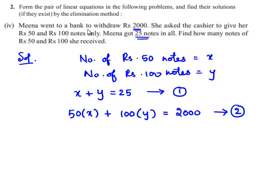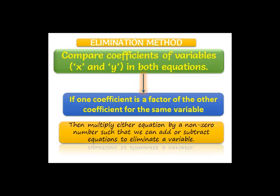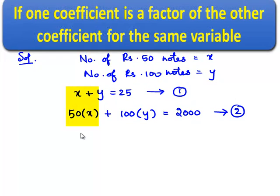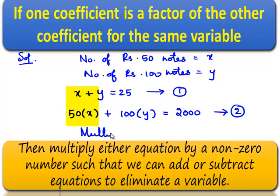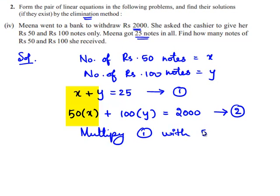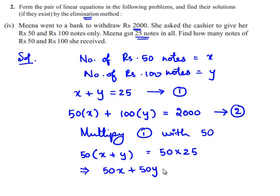We have to solve both equations by elimination method. Let us multiply equation 1 with 50. Now, we will be getting 50 times of X plus Y is equal to 50 times of 25, which implies 50 times of 25 is nothing but 1250.